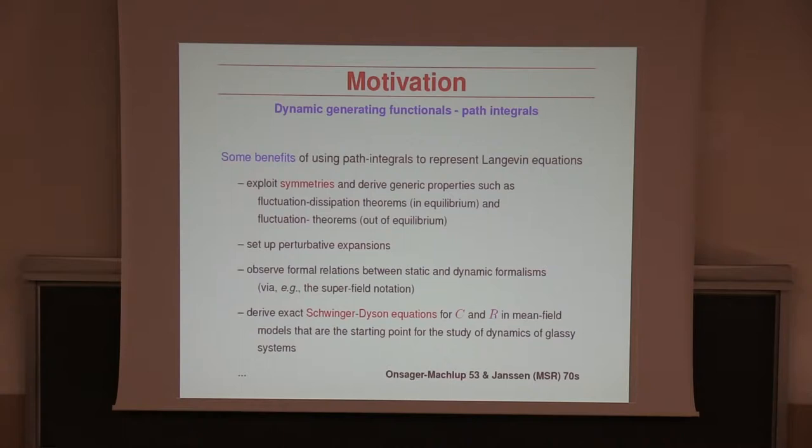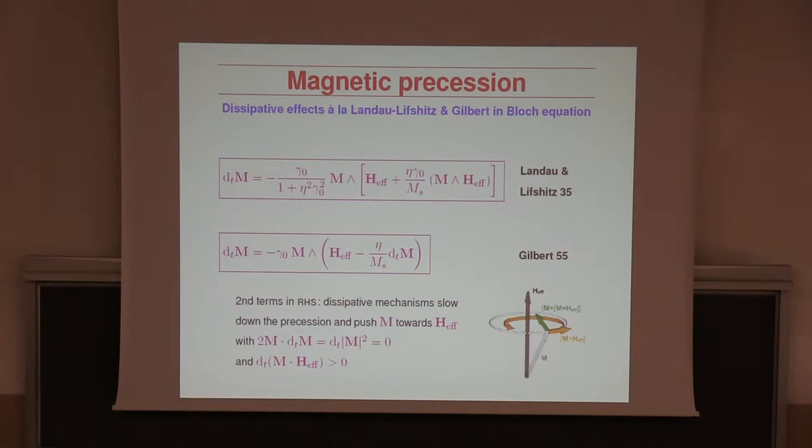One can set up perturbative expansions easily, observe formal relations between statics and dynamics — this is related to replicas, for example via super-field notations — or derive Schwinger-Dyson equations for correlations and responses like the ones that Silvio was using yesterday with effective constraint methods. We all know this has been done in old papers, but I want to revisit this problem for a particular set of stochastic processes.